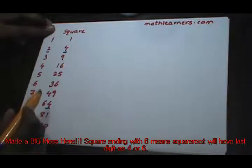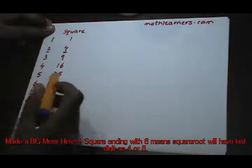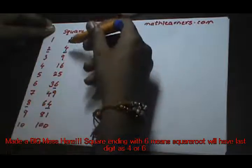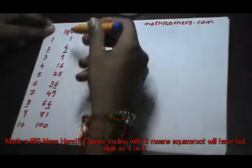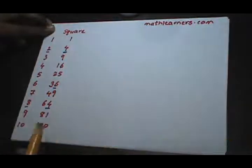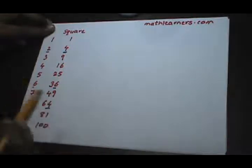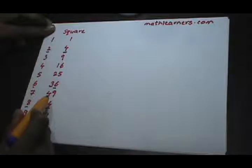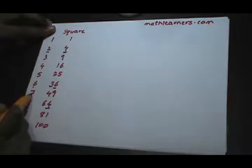If we have a perfect square ending with 6, since 6 appears only once in the squares table, we can directly say the square root will end with 6. Similarly, if we have a perfect square ending with 9, the square root will end with either 7 or 3.